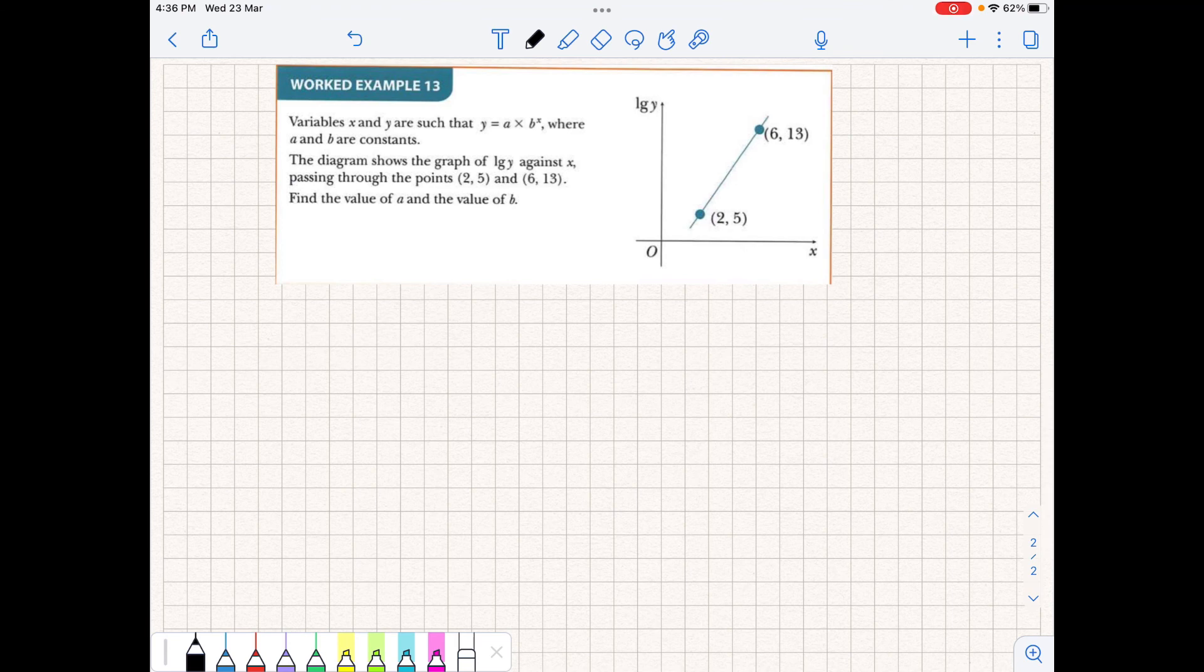Right, we can do the same thing if we have some kind of logarithmic function. Okay, so the variables x and y are such that y = a times b to the x, where a and b are constants. And the diagram shows the graph of log y versus x, and it passes through these two points. So we want to find the value of a and the value of b. Okay, so we need to change the equation that we're given, y = a times b to the x, into some kind of logarithmic equation.